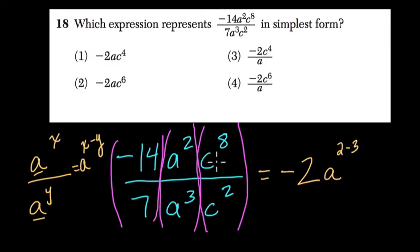Our last group is c to the 8th over c squared. That's going to equal c to the 8 minus 2. And we can simplify this a little bit.